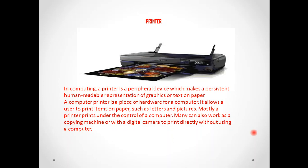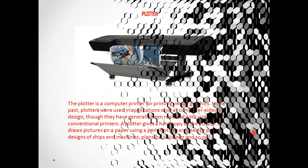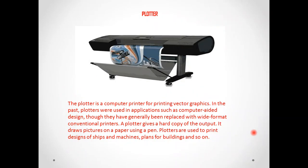There are different types of printers available in the market, such as impact, non-impact, color, black and white, laser, and inkjet. The next output device is the plotter. A plotter also looks like a printer and generates hard copies, but it is used for generating wide-format hard copies like maps, ship designs, and engineering drawings.